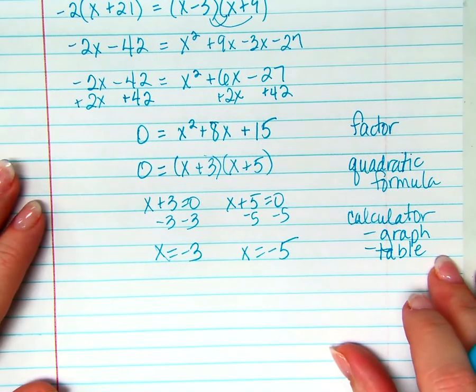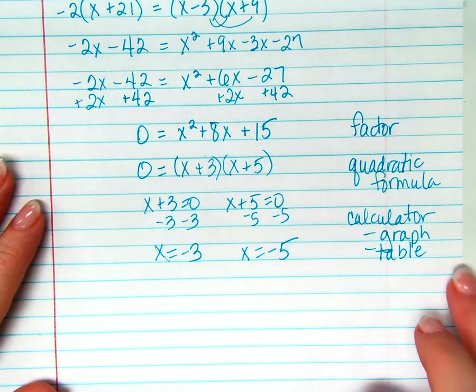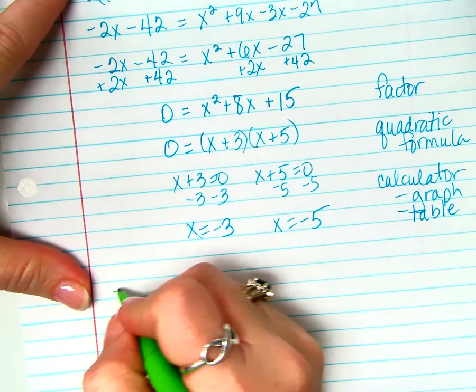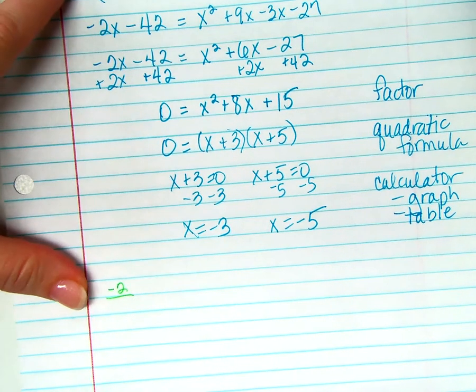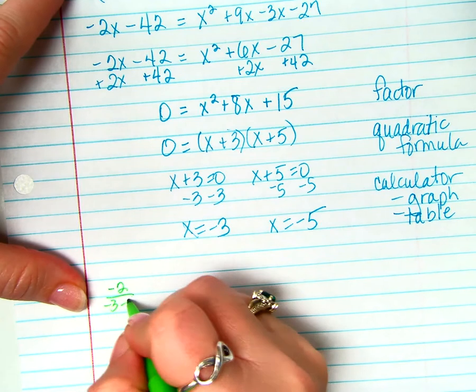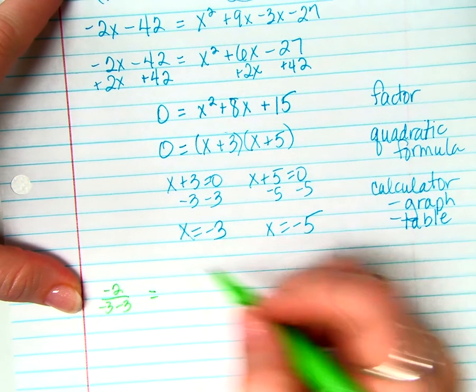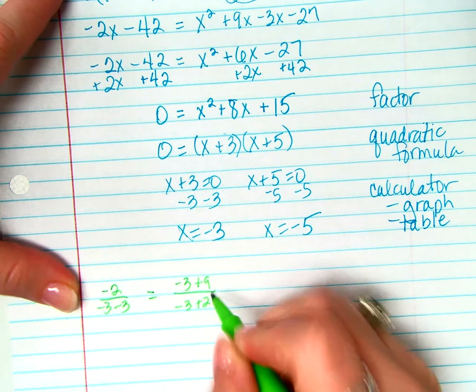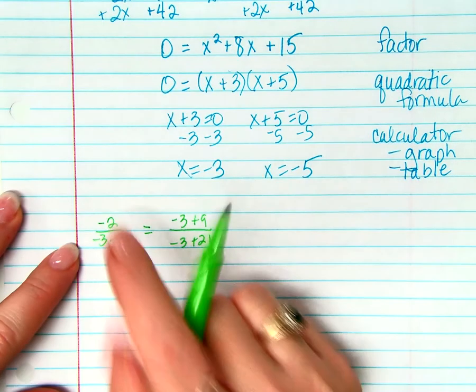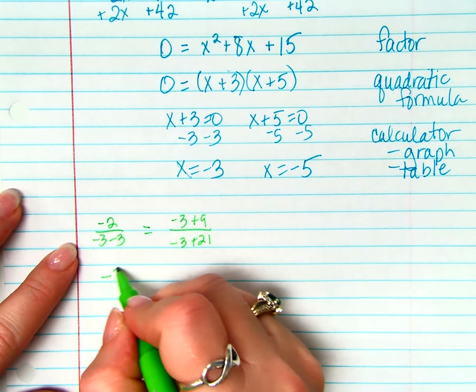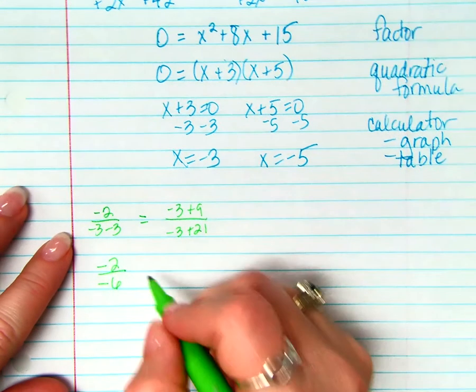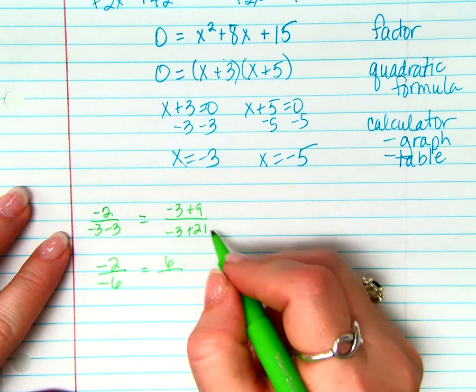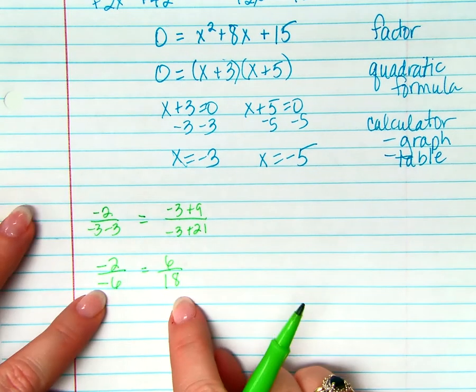So are they both right? Is one of them right? Is neither one of them right? Check it. So negative 2 over negative 3 minus 3 should equal negative 3 plus 9 over negative 3 plus 21. Well, negative 3 minus 3 is negative 6. Negative 3 plus 9 is 6. Negative 3 plus 21 is 18. Are those two fractions equal to each other?